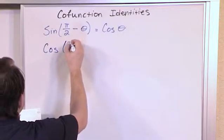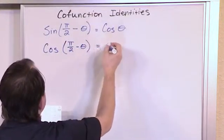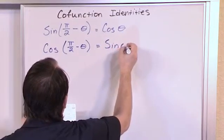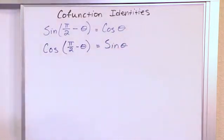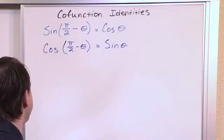The cosine of pi over 2 minus theta is equal to the sine of theta. And again, this is the same kind of thing. If I start with some angle theta, let's say it's pi over 3 radians, right? 60 degrees.